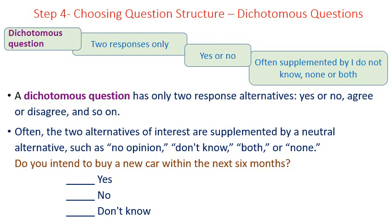Another type is the dichotomous question, which has two responses only — yes or no — and is often supplemented by 'I don't know,' 'none,' or 'both.'